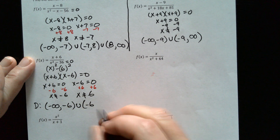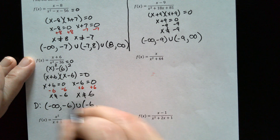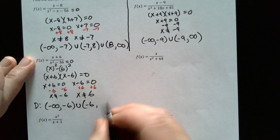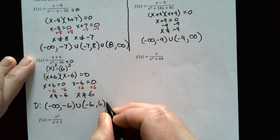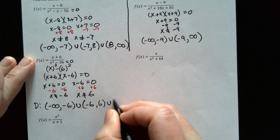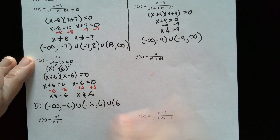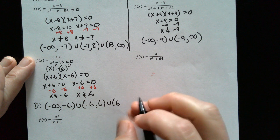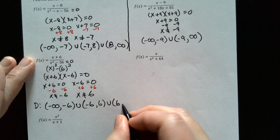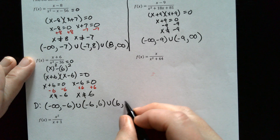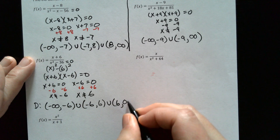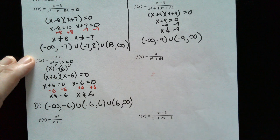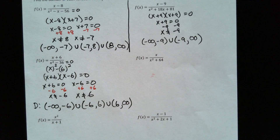And then comma, it goes all the way to 6, then do it again with a 6: parentheses, union, parentheses, 6, comma, and then nothing else to stop us from going to positive infinity. So that's the domain.